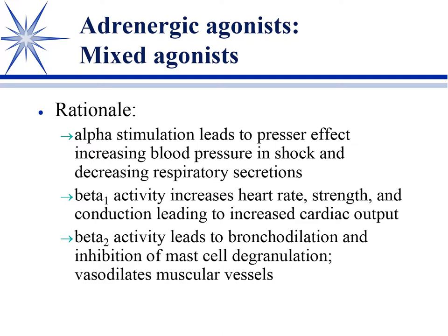For the adrenergic agonists, we've got three adrenergic receptors: beta-1, beta-2, and alpha-1. Alpha stimulation has a pressor effect on blood pressure - we don't really want that in straight bronchoconstriction, but in anaphylaxis it's a good thing. It also decreases respiratory secretions and shrinks swollen mucous membranes. A decongestant is actually a vasoconstrictor constricting blood vessels in the mucosa to minimize swollen passages.